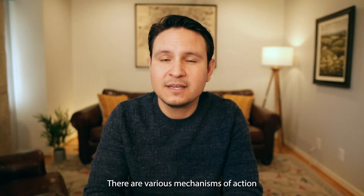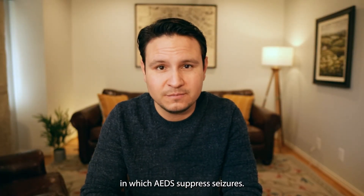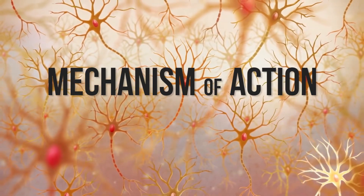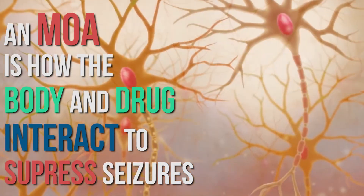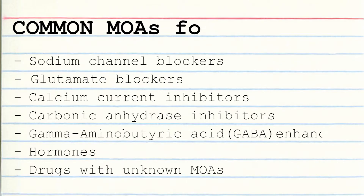There are various mechanisms of action in which AEDs suppress seizures. An AED's mechanism of action, also called the MOA, is how the body and the drug interact with each other in order to suppress seizures. Feel free to pause the video here so you can write down these common MOAs. An MOA is essentially what the AED does to the body to reduce seizures, and these MOAs will be included in individual breakdowns of each AED in upcoming videos.